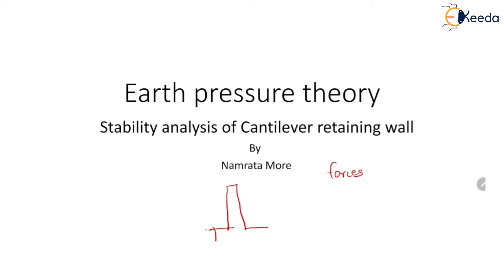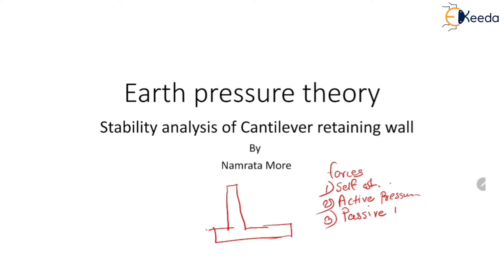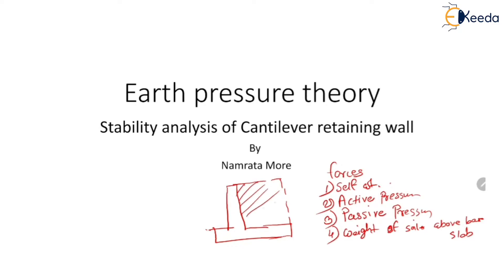Suppose this is the cantilever retaining wall. The forces acting on the retaining wall are: first, the self-weight of the retaining wall; second, active pressure towards the backfill side; third, passive pressure, which acts from the direction where the cantilever retaining wall is supposed to move; and fourth, the weight of soil above the base slab, which acts on the base slab.